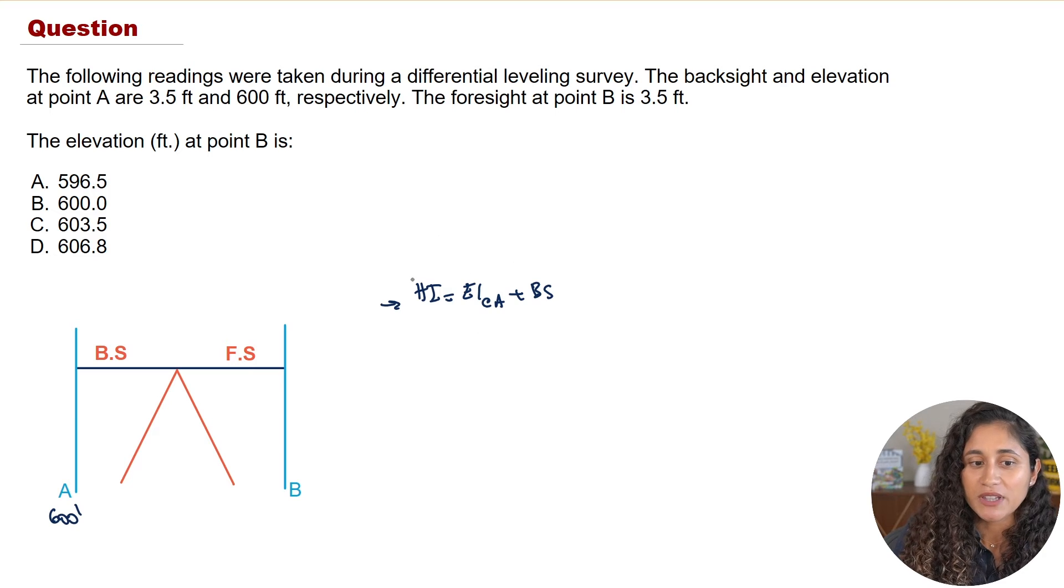Now once we determine the height of the instrument, what we can do is we can put the measurement rod at another point, for example here at point B, and then we can determine the foresight and then from there we can actually find the elevation at point B. So the elevation at point B, the way we're going to calculate this, it's going to be the elevation at A plus the backside minus the foresight. That's it.